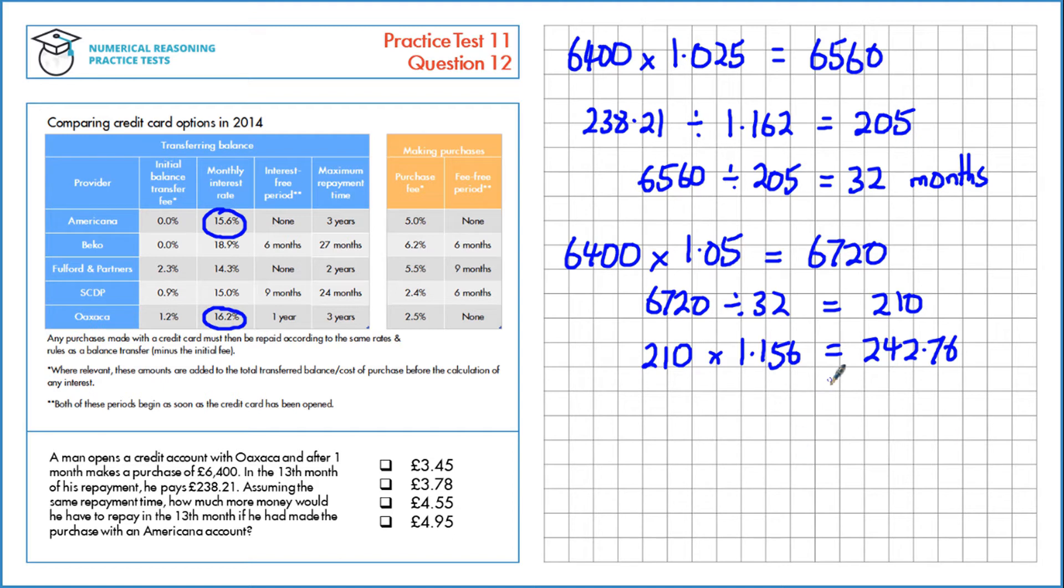The question asks how much more money would he have to repay in the thirteenth month. That's the difference between this value and this value here. So £242.76, the thirteenth month for Americana, take away the original value for the thirteenth month, which is £238.21.